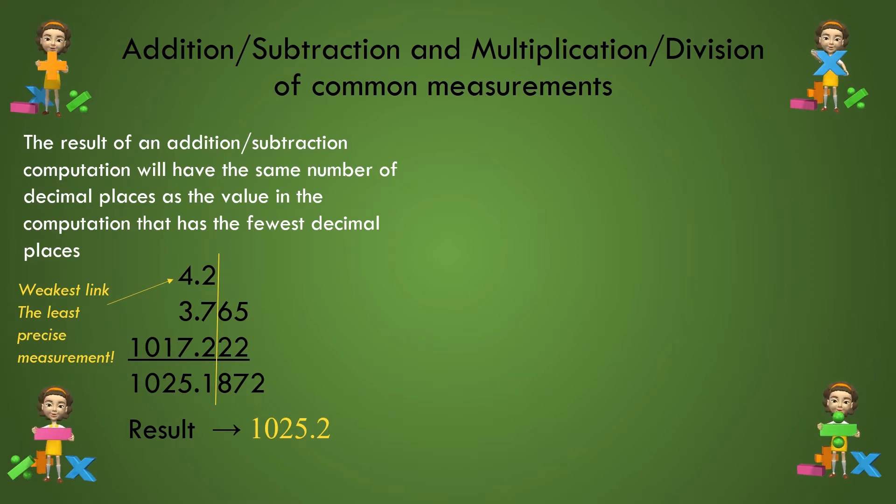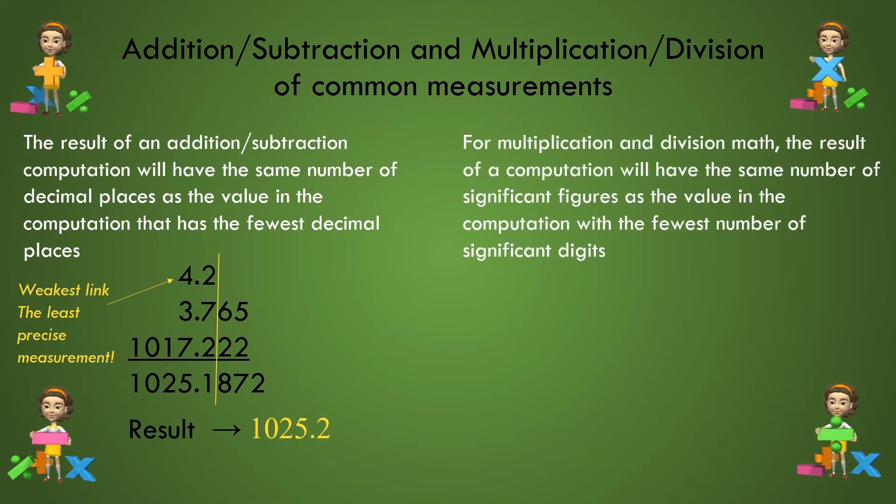For multiplication and division math, the result of this calculation will have the same number of significant figures as the value in the computation with the fewest number of significant digits.